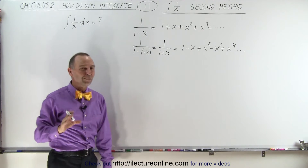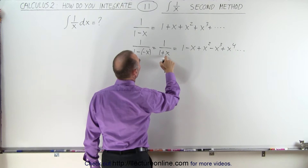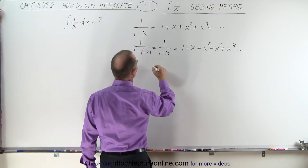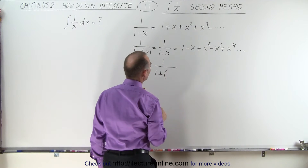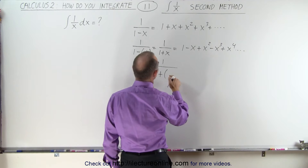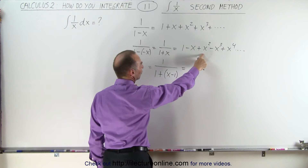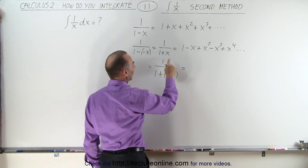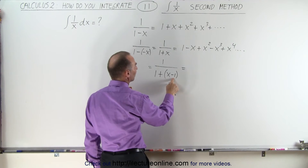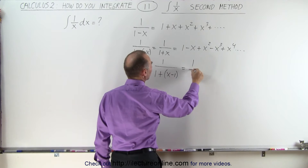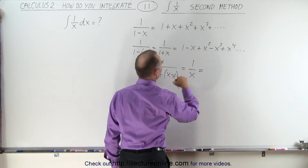And now we're going to make one more substitution. Now we're going to let every x be x minus 1. So we're going to let that equal 1 over 1 plus (x minus 1). We'll take this expansion and replace every x by x minus 1. Notice that 1 plus (x minus 1) simply becomes 1 over x.